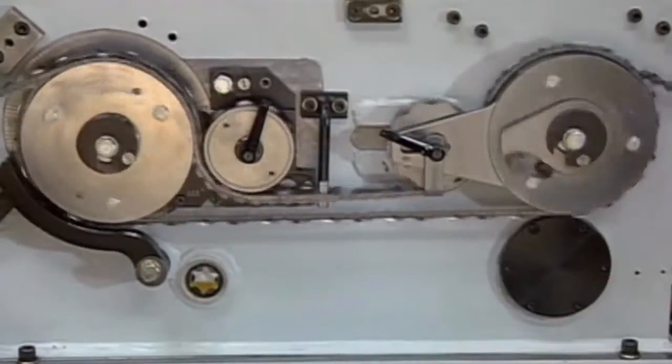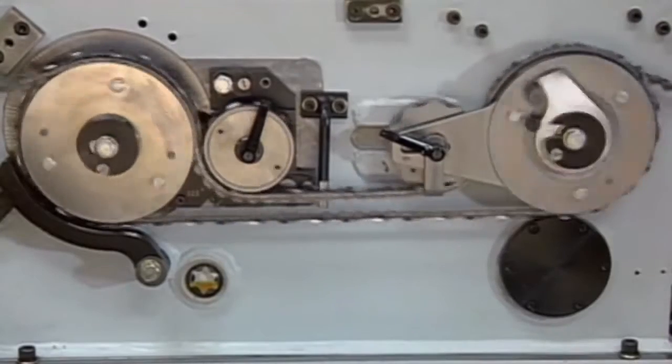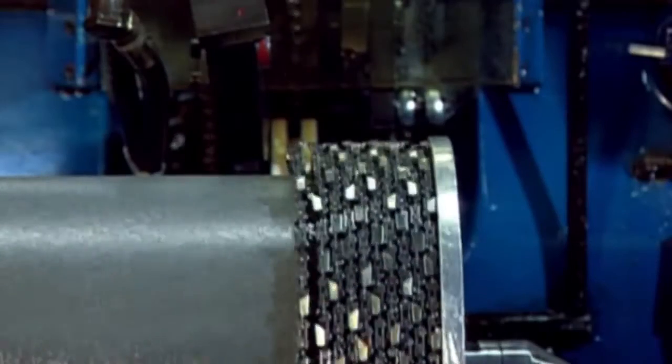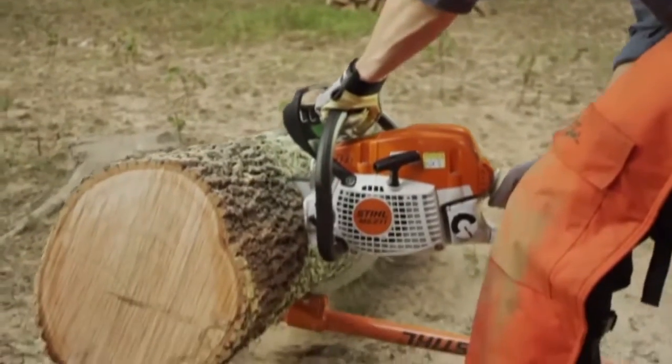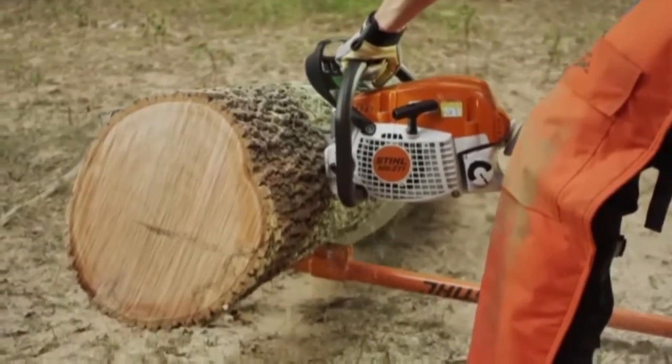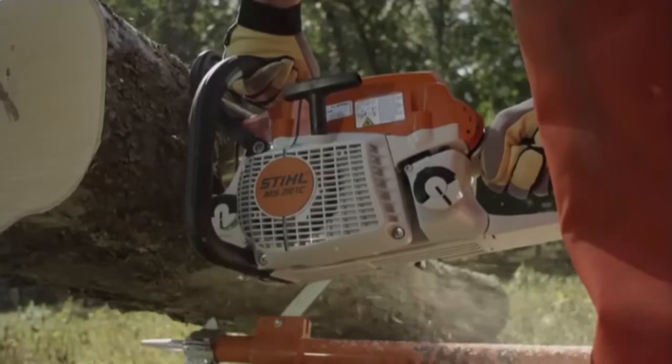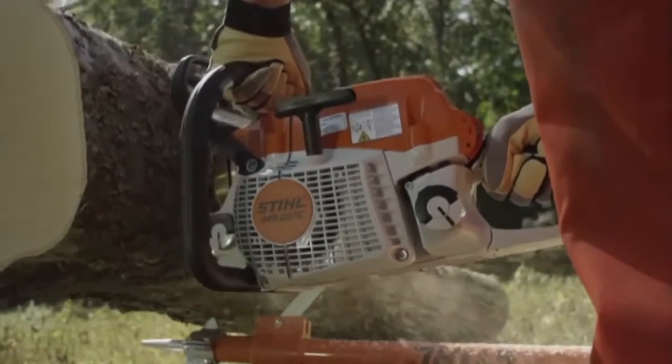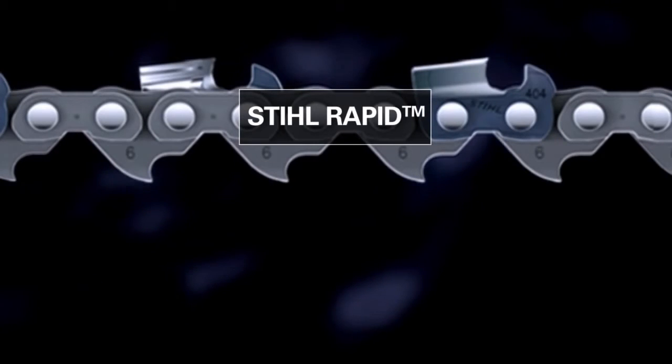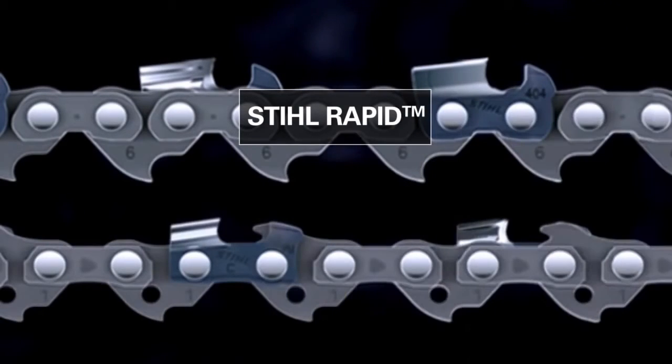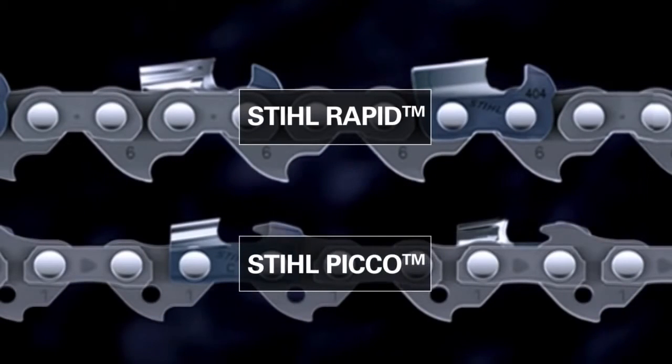The individual parts of the chain are automatically joined together by machines. STIHL manufactures a variety of chains suitable for a vast range of different applications and chainsaw types. Overall, these can be divided into two basic types of chains: STIHL Oilomatic Rapid chains with tall tooth design for professional use, and Oilomatic Picco chains with short tooth design for small saws.